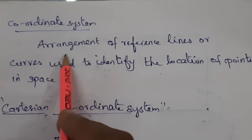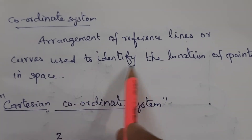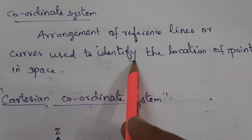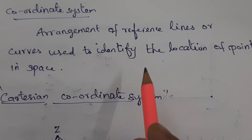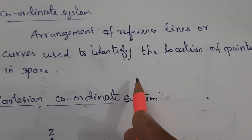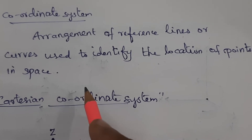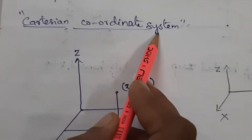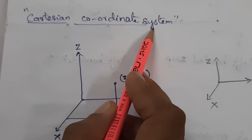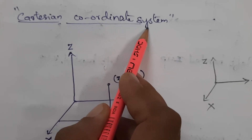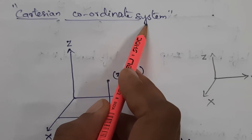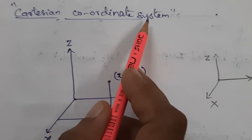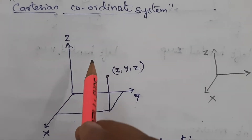A coordinate system is the arrangement of reference lines or curves used to identify the location of points in space — the x, y, z axes used to identify the position of an object. At any given instant of time, the frame of reference with respect to which the position of the object is described in terms of x, y, z is called the Cartesian coordinate system.